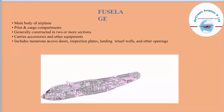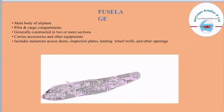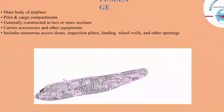The fuselage is the main body of the airplane, housing the pilot and cargo compartments. It is generally constructed in two or more sections and carries accessories and other equipment. It also includes numerous access doors, inspection plates, landing wheel wells, and other openings. Here we can see a complex picture showing how the internal structure of a fuselage looks.